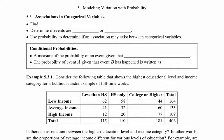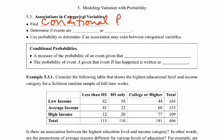Let's take a look at section 5.3. We're going to look at a few more formulas and relationships with categorical variables and how we can calculate some probabilities. Our objectives here: the first one is to find conditional probabilities, and we'll have a formula to help us do that, or we'll be able to use a chart.